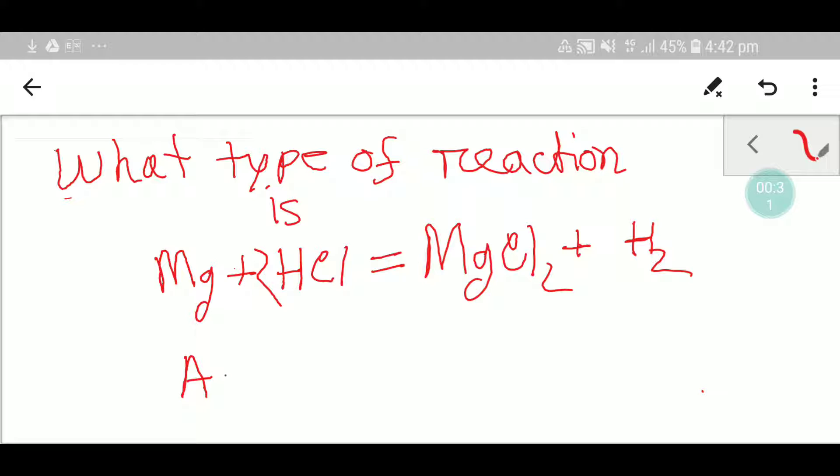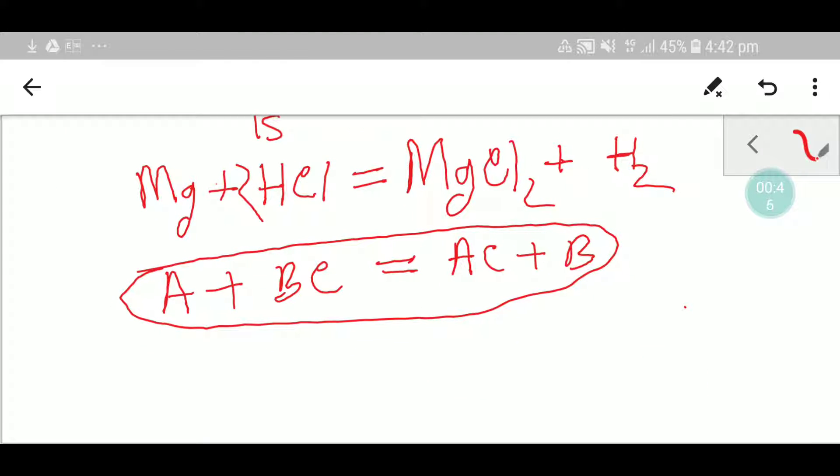This reaction is like this: A plus BC, and we get AC plus B. Right, and this type of reaction is called a single replacement reaction.